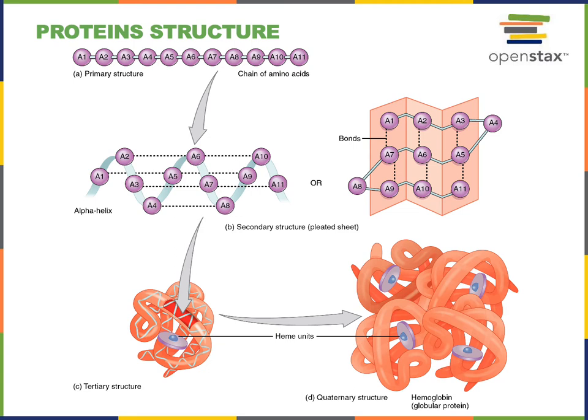Proteins also have secondary and tertiary levels of structure. The secondary structure of the polypeptide is a folded-up shape that results from hydrogen bonding between nearby amino acids. These amino acids can fold up to form an alpha helix spiral-shaped secondary structure, or they can fold into a pleated sheet secondary structure shape. In either case, this structure is stabilized by hydrogen bonding between adjacent amino acids.